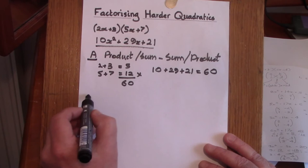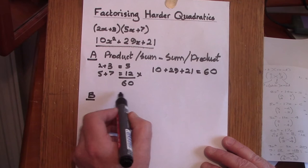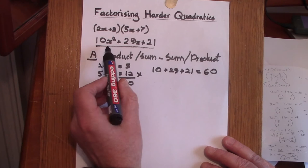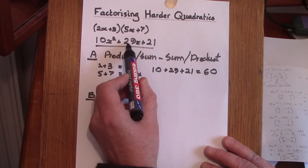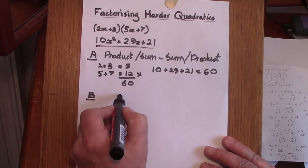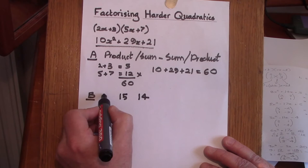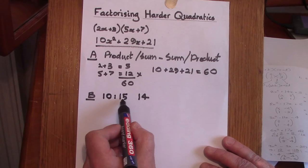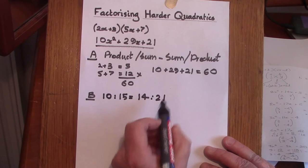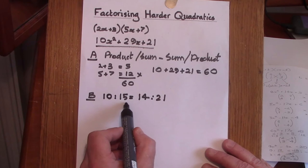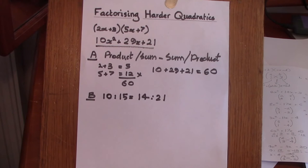Property B is to do with splitting the middle term — it's a ratio or proportion. If we take the middle coefficient 29, it can be split into two parts, 15 and 14, such that the first coefficient 10 is to 15 as 14 is to 21. This can be used to help factorize some of these harder quadratics.